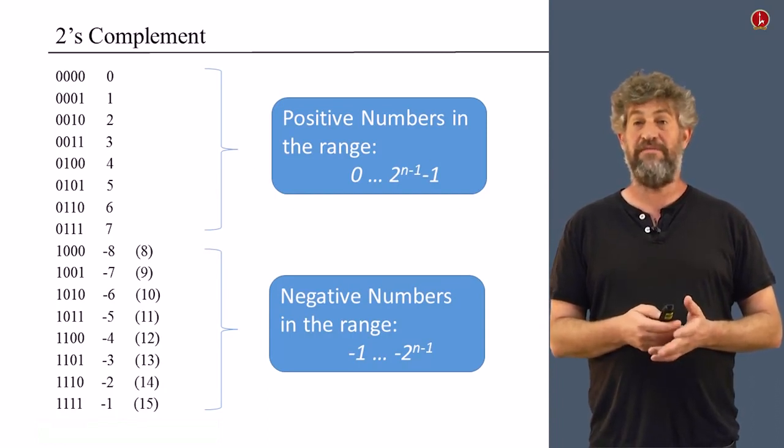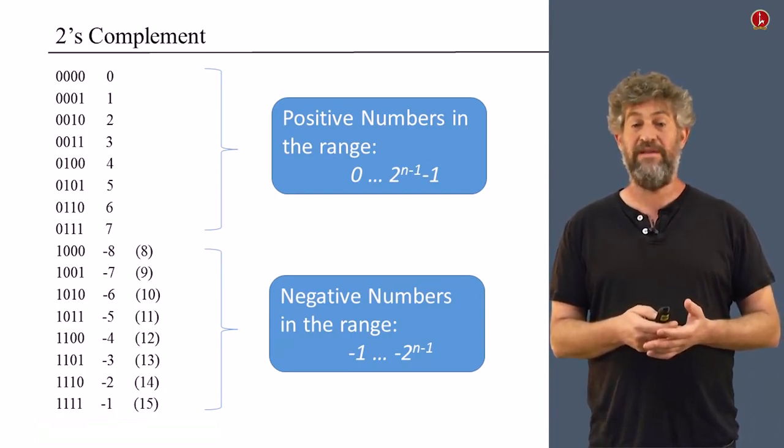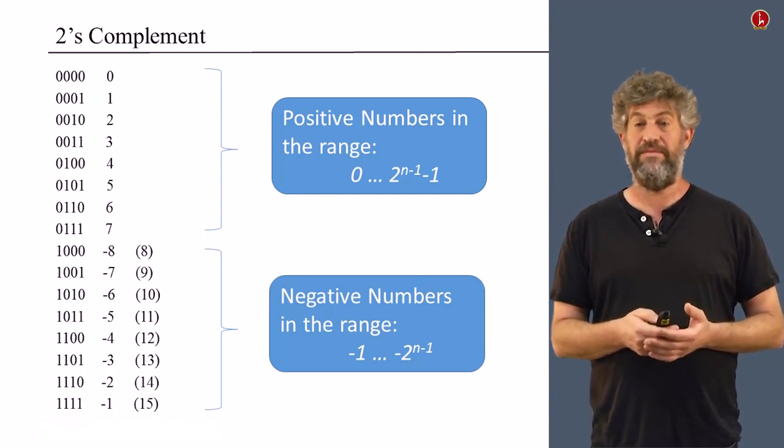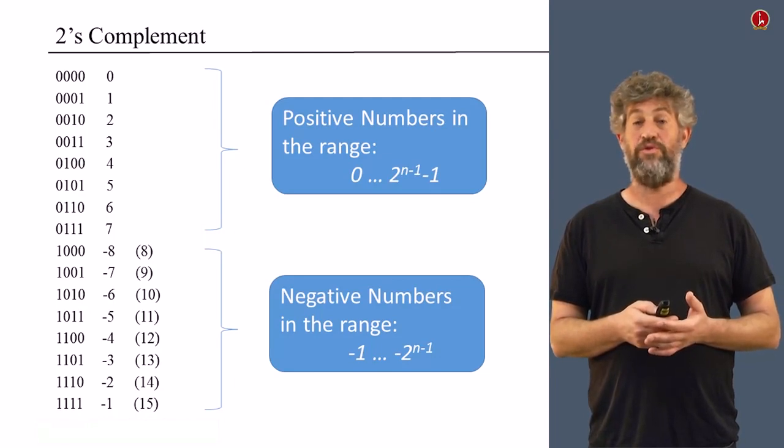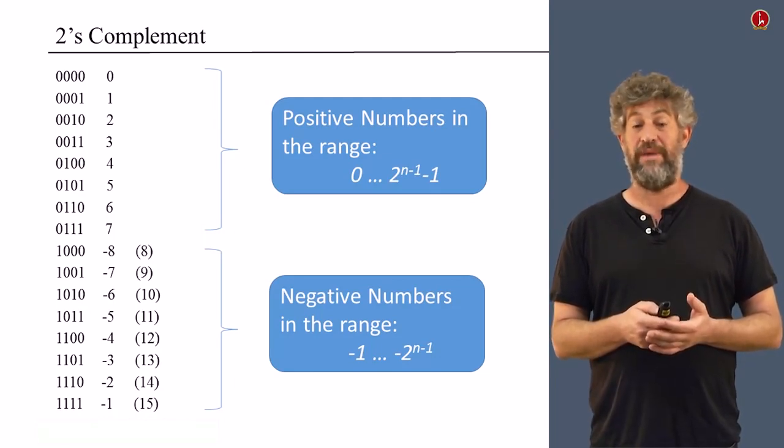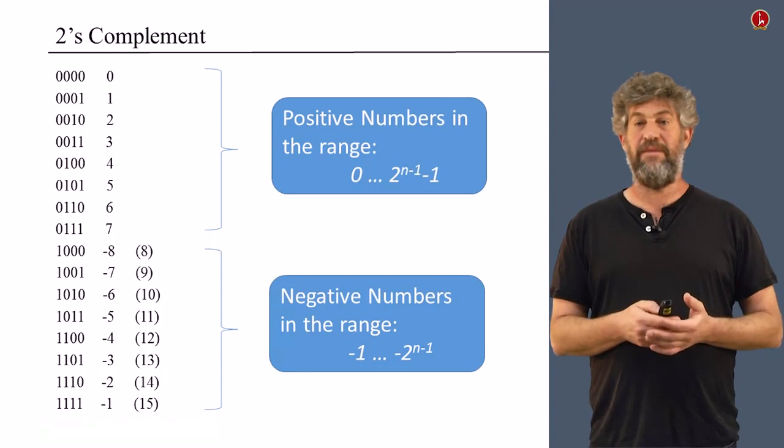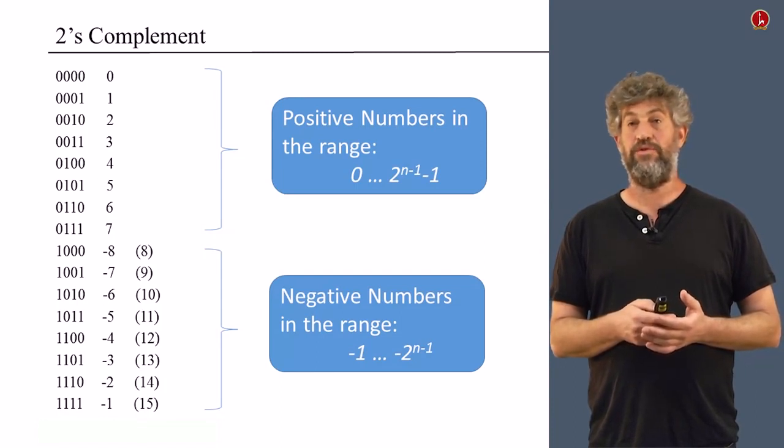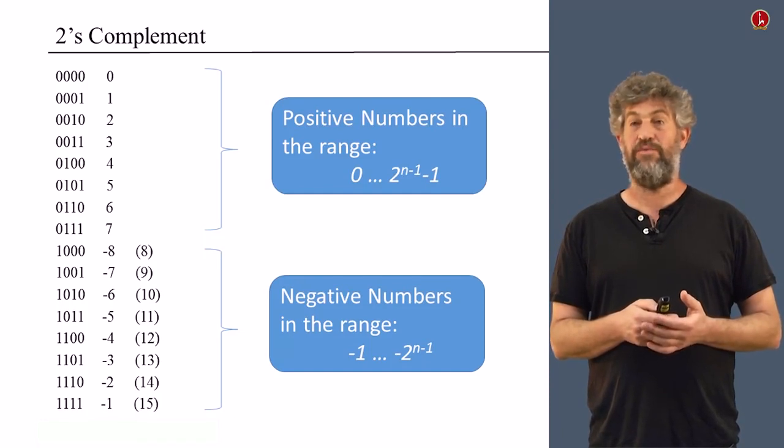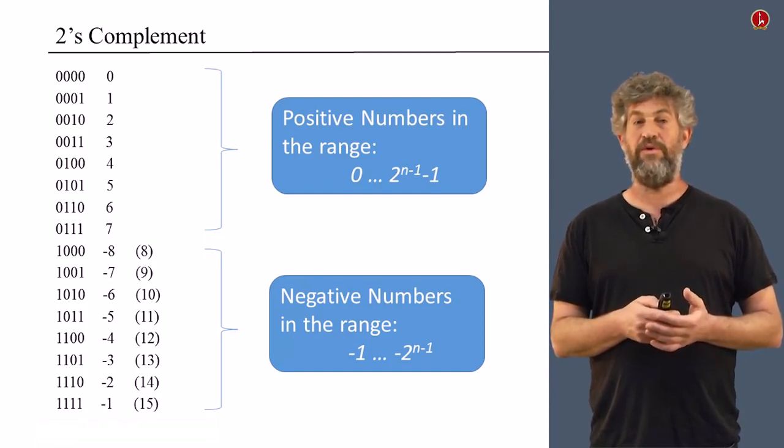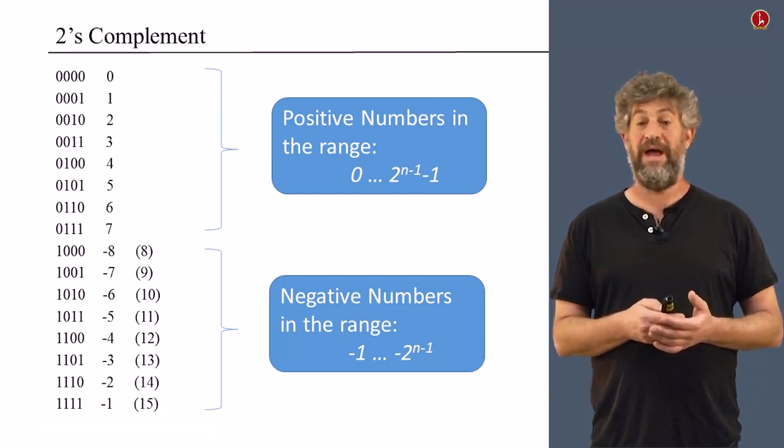Let's look what we get in this representation. First of all, the positive numbers that we have are half of what we previously had. Basically, we're missing a bit so we can represent all, not the numbers up to 2 to the n minus 1, but rather up to 2 to the n minus 1, all that minus 1. The negative numbers in this system, we get one more of them. So we get all the negative numbers between negative 1 and negative 2 to the n minus 1. In our case, we get the negative numbers between negative 1 and negative 8, but we get only the positive numbers between 0, 1 and 7.